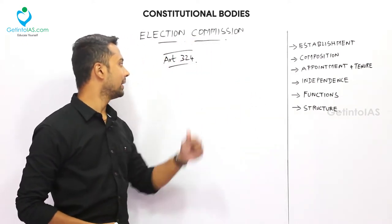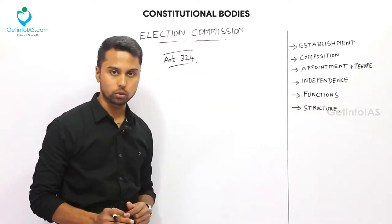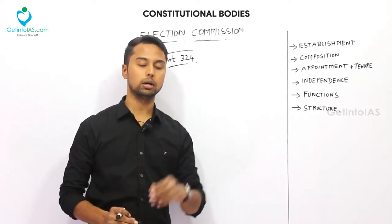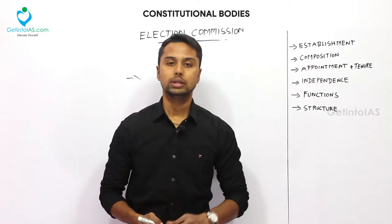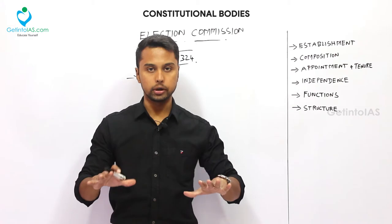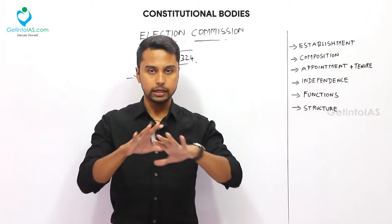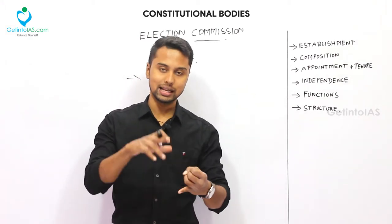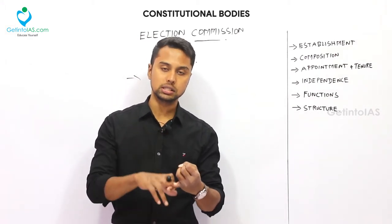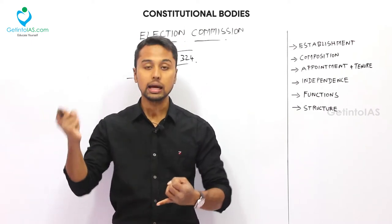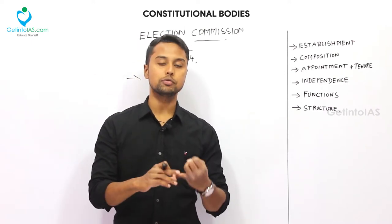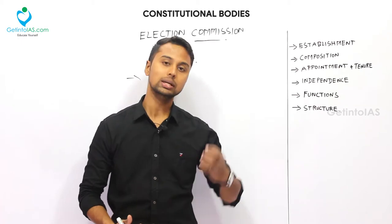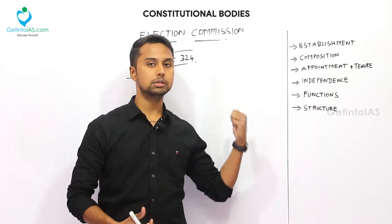Article 324 establishes the Election Commission to ensure free and fair elections. It is a permanent and independent body. This Election Commission is a common body for the whole of India. It is concerned with the elections of Parliament as well as State Assembly elections.